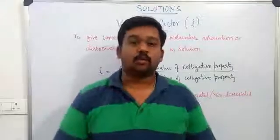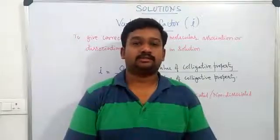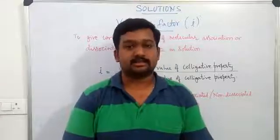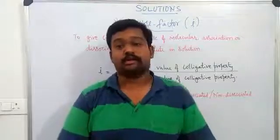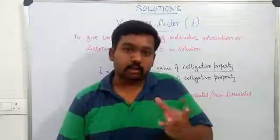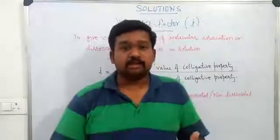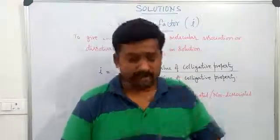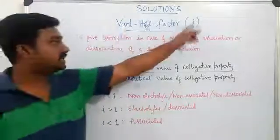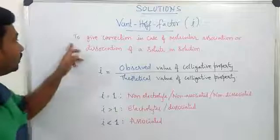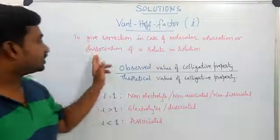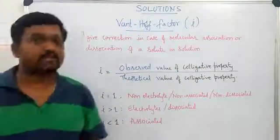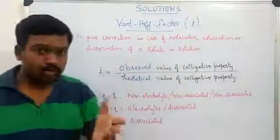Let us now see what the Van't Hoff factor is. It is very important because the Van't Hoff factor is introduced into colligative property calculations, as colligative properties depend only on the number of particles, not on their nature. Whenever there is molecular association or dissociation in a solution, we have to introduce this correction factor, because it is going to change the number of particles in solution. The Van't Hoff factor is indicated by the small letter i, used to give correction in cases of molecular association or dissociation of a solute in solution.